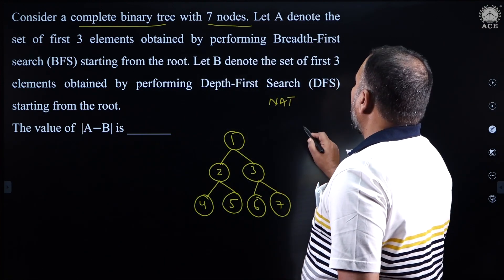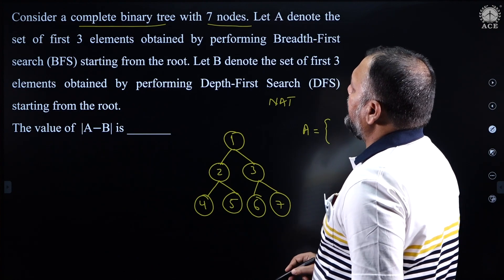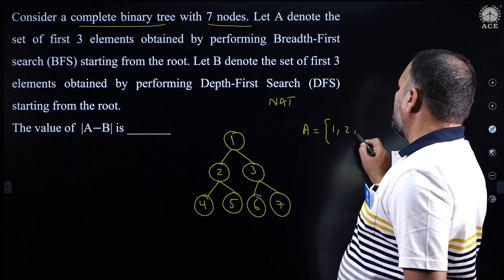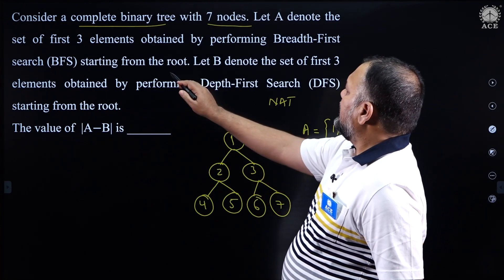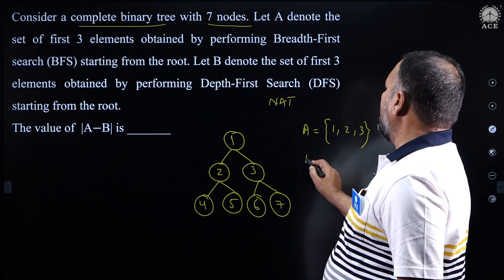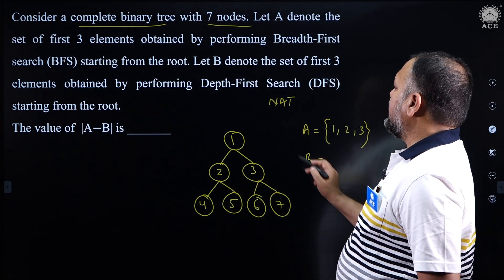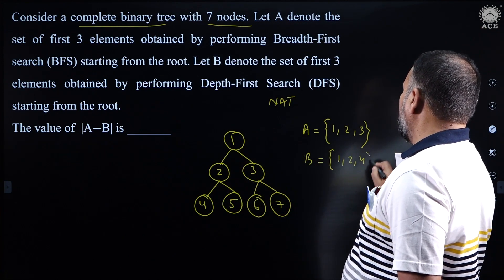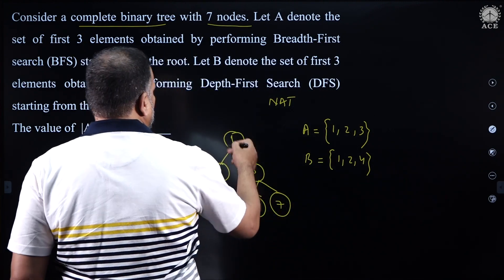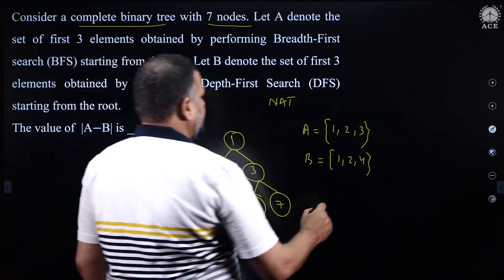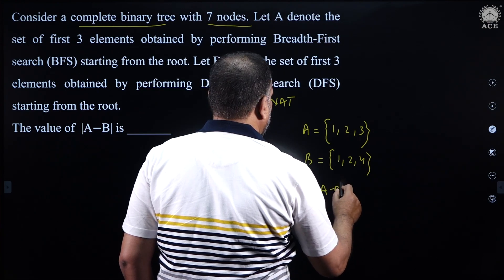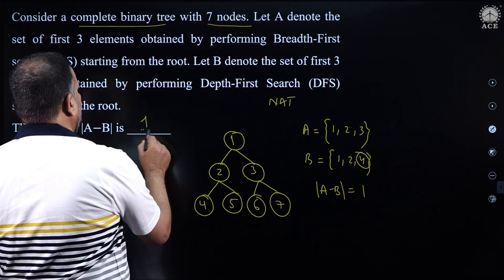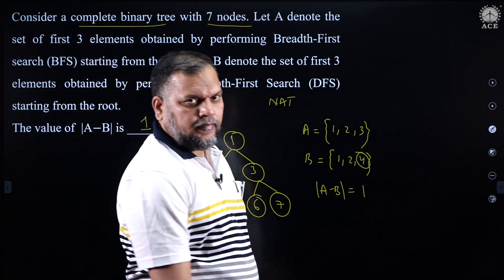Let A denote the set of first 3 elements obtained by performing breadth first search. When you carry out a BFS of this tree, you get the first 3 nodes as 1, 2, 3. Let B denote the set of first 3 elements obtained by performing depth first search. In DFS starting from root 1, you get 1, 2, 4. So the sets are A = {1,2,3} and B = {1,2,4}. The difference A minus B is element 3, and the cardinality is 1. So the answer is 1.